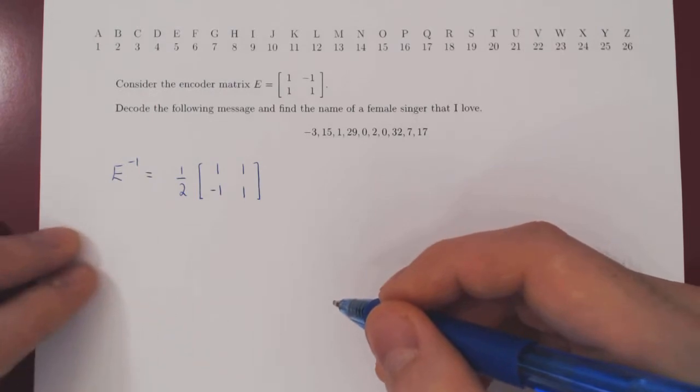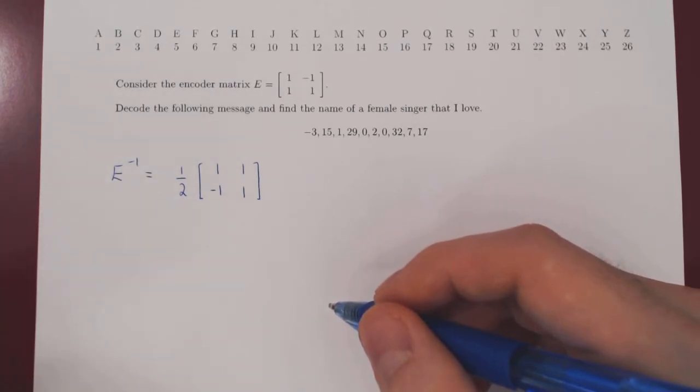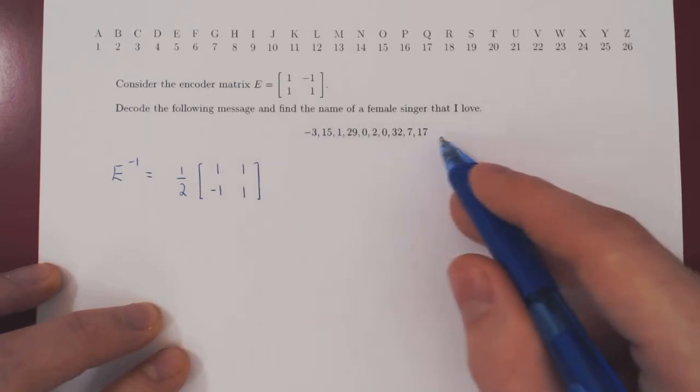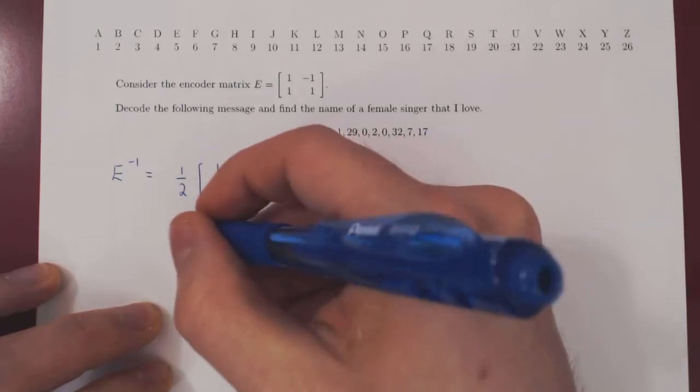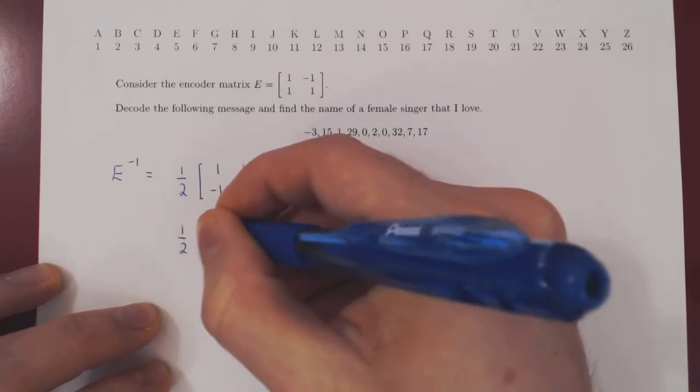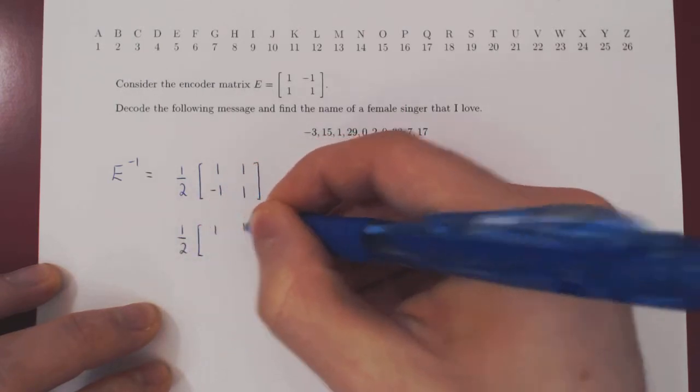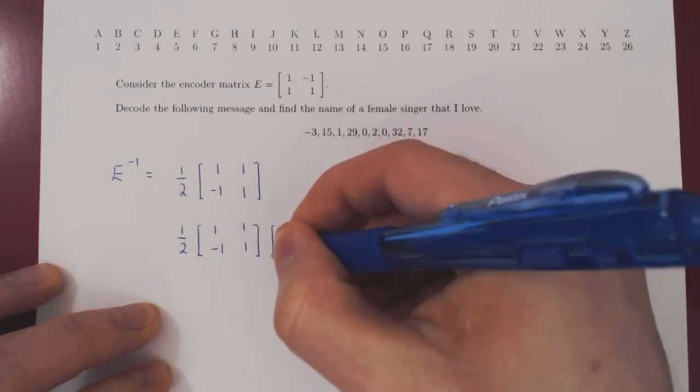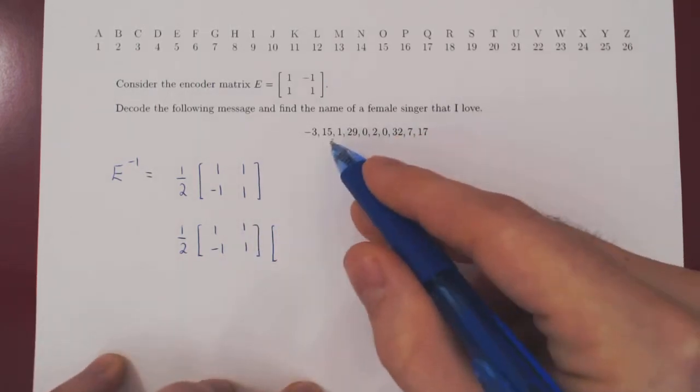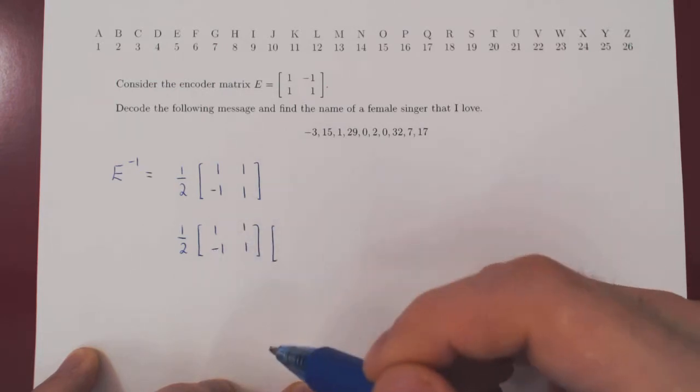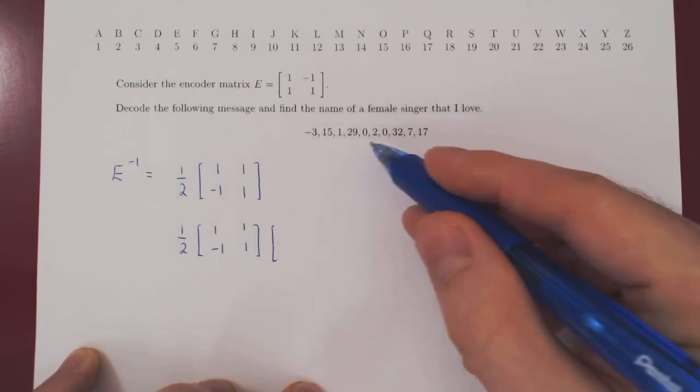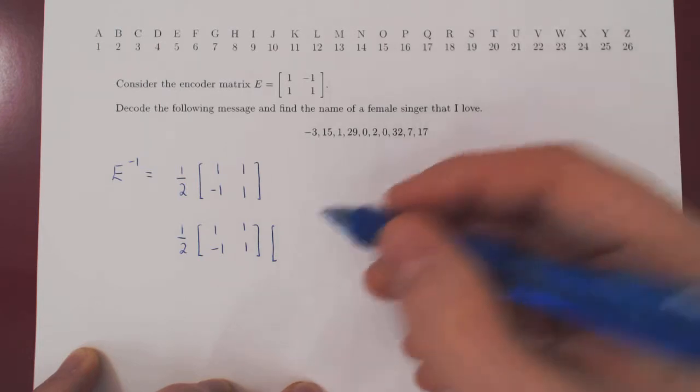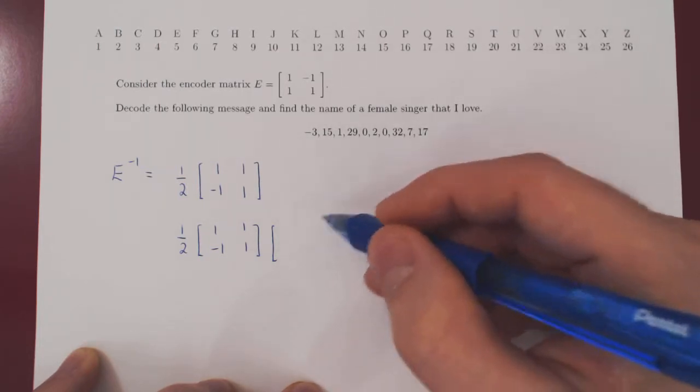So now we have the inverse of the encoder matrix, and so we'll decode the message using our inverse matrix. So 1 half, 1, 1, negative 1, 1, times our message. Well, because we have a 2 by 2 matrix, we have to rewrite our encoder message into a matrix where the columns have length 2.